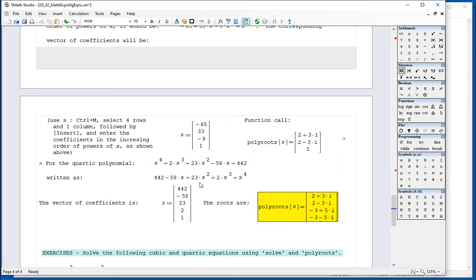Here's another example, a quartic polynomial written in increasing order, which will let me write this vector with the coefficients in increasing order of the powers of x. And the function poly root will find that I have all four complex roots in this example.